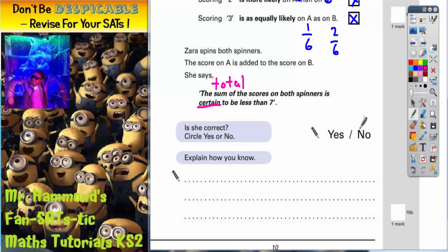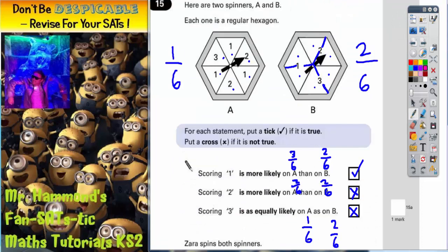Now we're not going to get the marks if all we do is circle one of these two and just guess without an explanation. We've got to give an explanation. So she's saying it's certain to be less than seven. Well, the easiest way of explaining this is that, let's look at what happens if she gets the top score on both spinners.